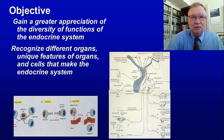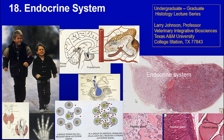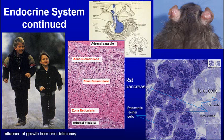The endocrine system. I'm Larry Johnson, a professor at Texas A&M University, and this is endocrine system part two. We want to cover the adrenal, pancreas, and talk a little bit about experimentation where we're transplanting testes into the ears of rats to look at total cell numbers and control.